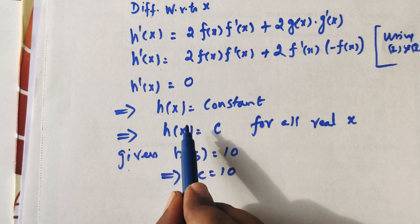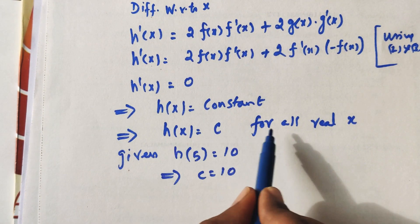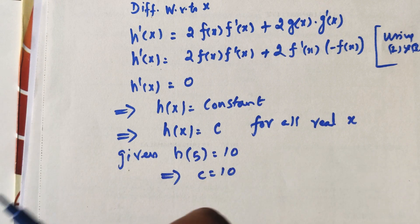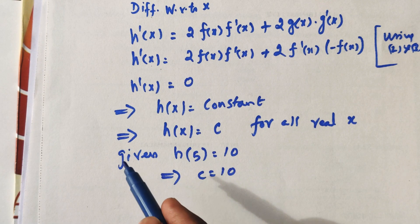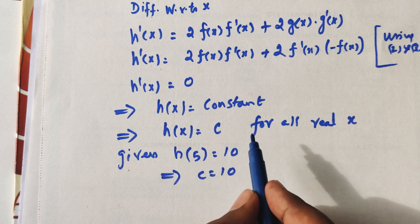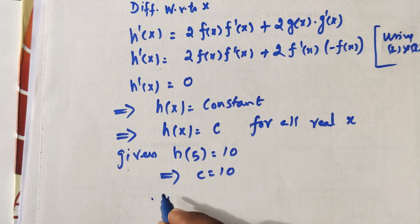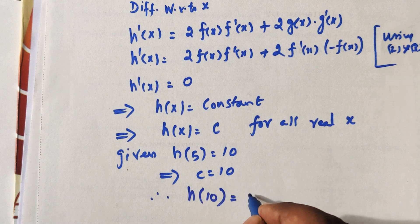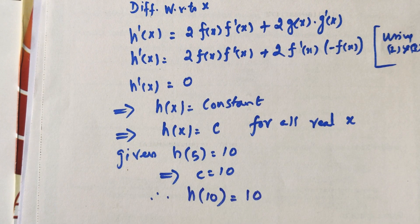H of X equals C for all real X. Given H of 5 equals 10, the constant C equals 10. Therefore, H of 10 also equals 10. This is correct.